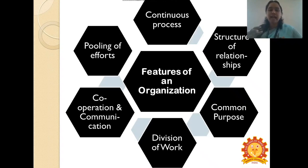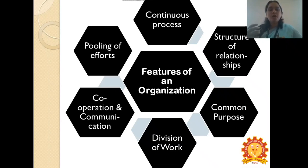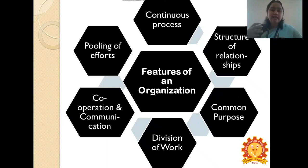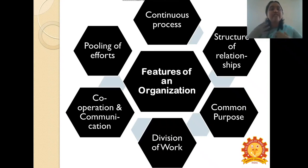The next point is cooperation and communication. Without cooperation, there cannot be harmony in a workplace. People must ensure that group cooperation takes place and there is a proper mode of communication between members. Once cooperation and communication are ensured, things will fall into place and it will be easy to achieve organizational objectives. The last point is pooling of efforts, which means assimilation of the efforts of people. Different individuals come together, put their efforts together, and do the task assigned to them to accomplish the goals.